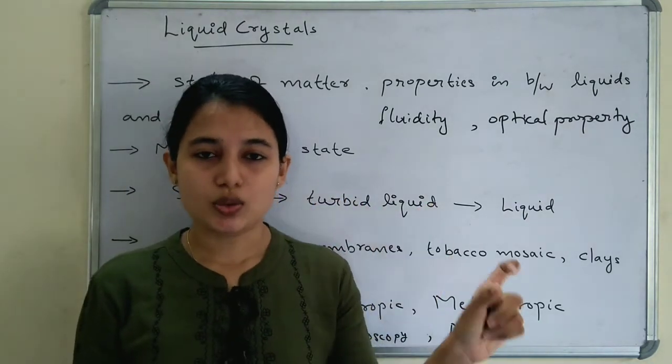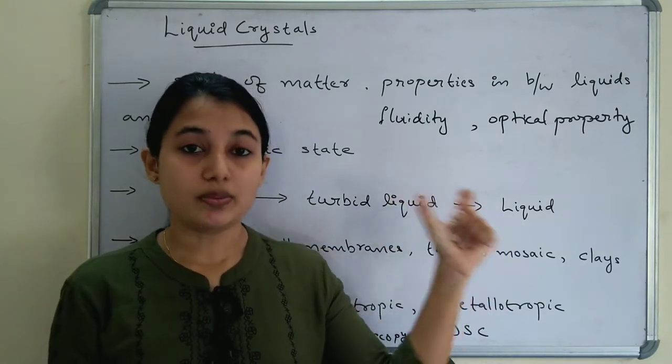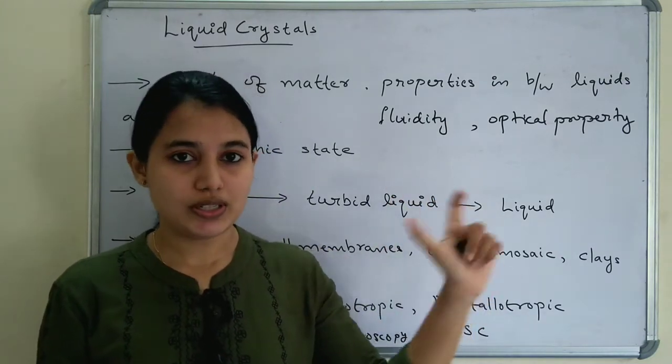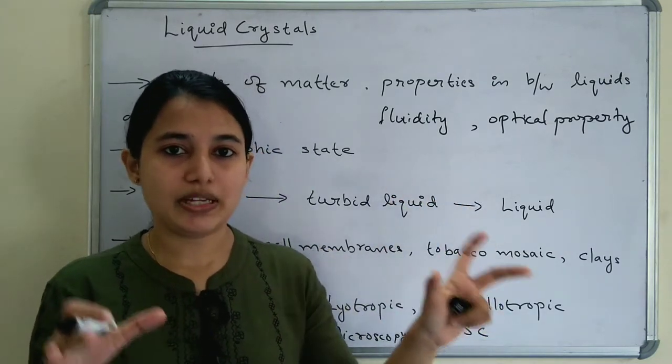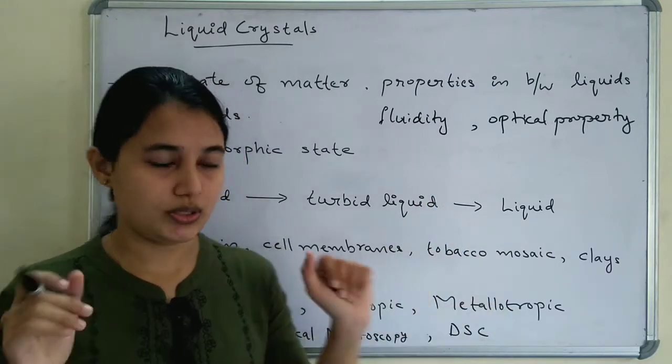The word 'meso' means intermediate. So, liquid crystals are also known as the mesomorphic state — the intermediate state between liquid and solid.